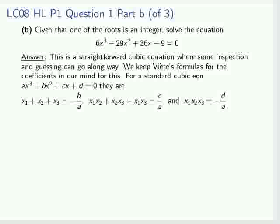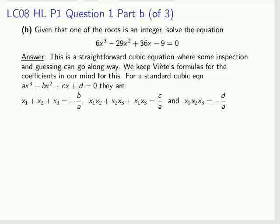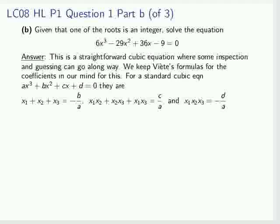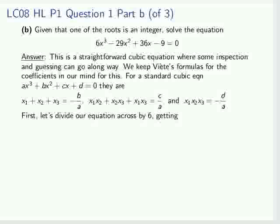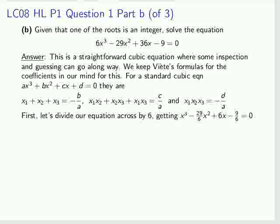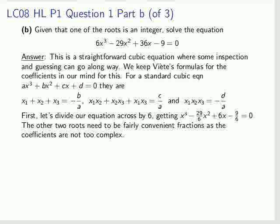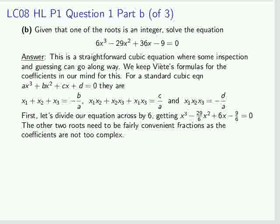The pairwise product, the sum of the pairwise products of the three roots, equals c over a, and the product of the three roots equals minus d over a. Let's divide our fraction across by 6, in which case we get that equation. The other two roots, besides the integer, need to be fairly convenient fractions, as the coefficients aren't actually that complex.